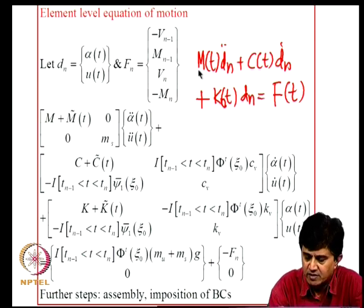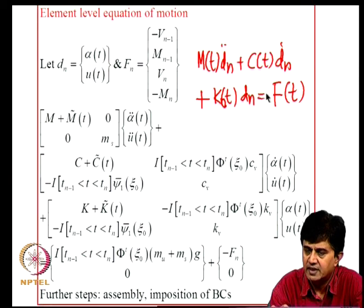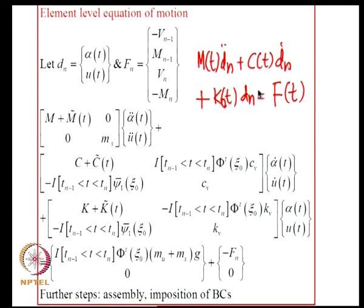If a series of loads pass on the bridge with some periodicity associated with these functions, one can use Floquet theory to determine stability conditions for the bridge-vehicle system — that is one possibility for qualitative behavior. If only one vehicle passes on the bridge, the time dependency is of a transient nature, and questions about stability of steady-state solutions are not applicable for this type of problem.